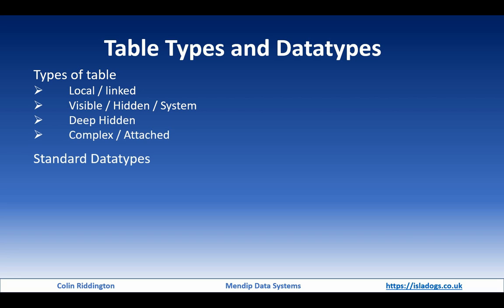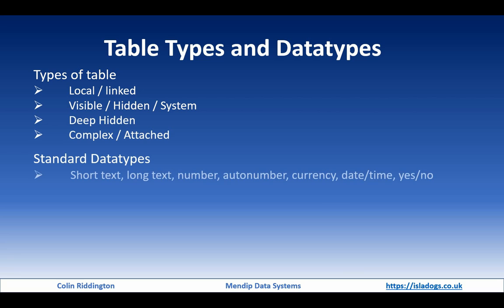Standard data types include short text, long text, number, auto number, currency, date/time, and yes/no fields — all standard and no problem. You can also have hyperlink, calculated, and OLE object fields, which are less commonly used. Calculated fields should be used very rarely; use a query instead if you can.